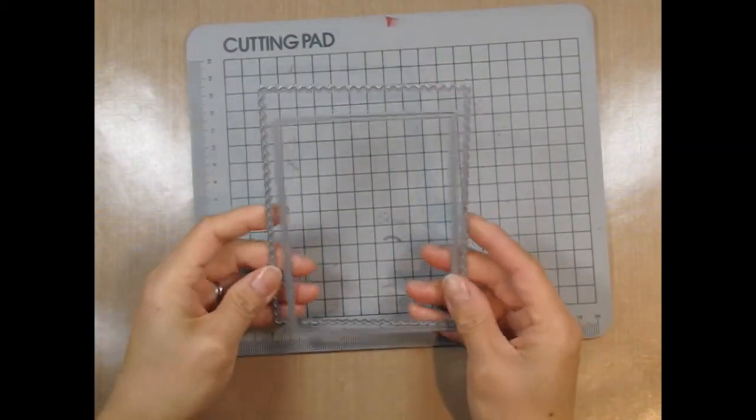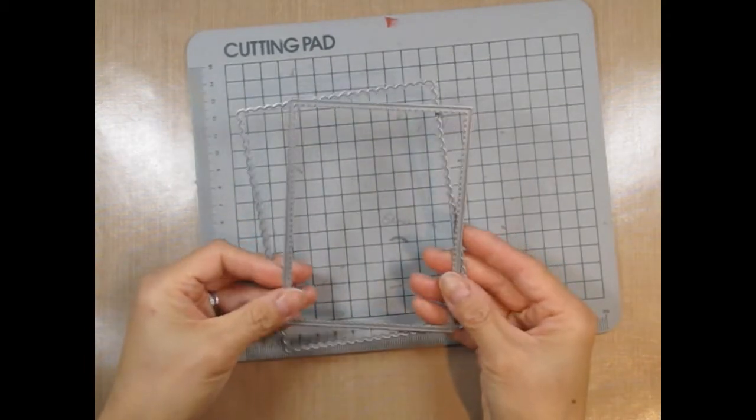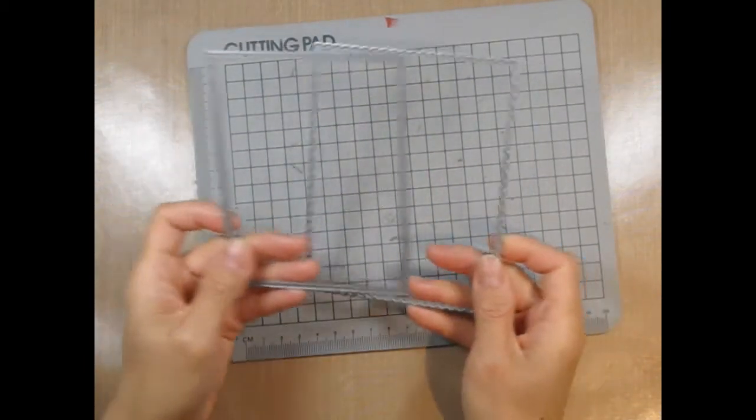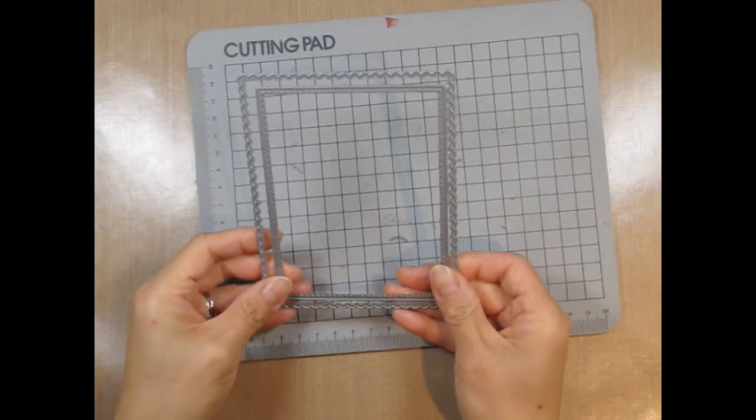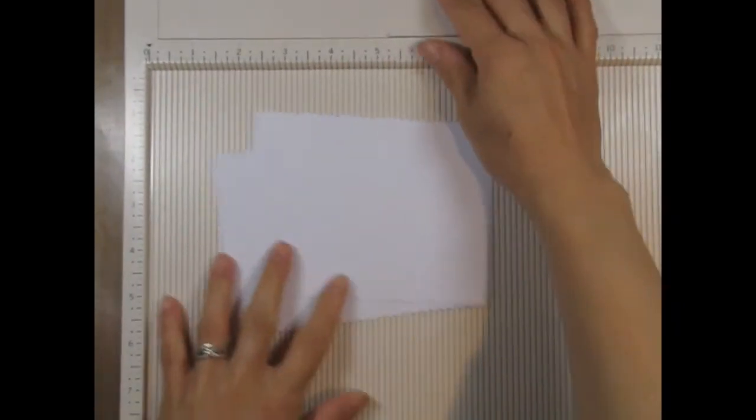I'm going to be using the Femme Frames, which includes the scallop rectangle and the stitched rectangle. I'm going to use both of these layered, and I'm actually going to use the scallop rectangle as the base of the card.